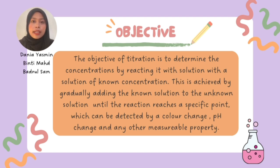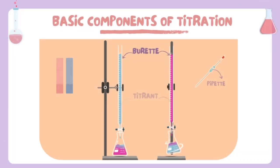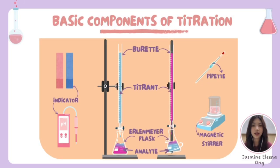This is achieved by gradually adding the known solution, the titrant, to the unknown solution until the reaction reaches a specific endpoint, which can be detected by a color change, pH change, or some other measurable property. Titration is a fundamental analytical technique in chemistry and its success depends on several key components.